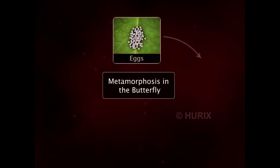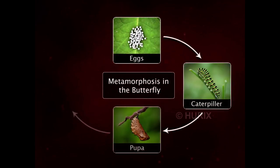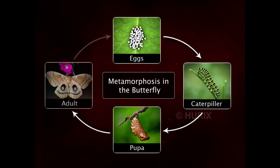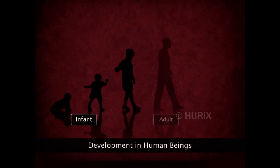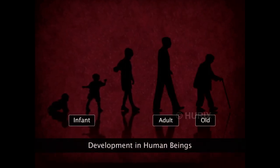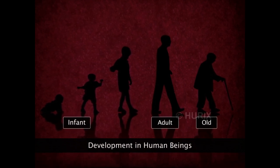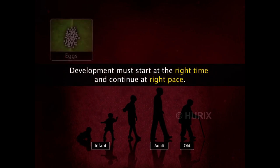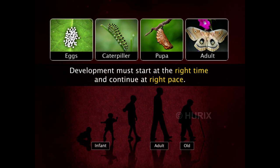To become an adult, the larva of a butterfly undergoes a series of changes during the stage known as metamorphosis. Similarly, our body also undergoes a variety of changes as it grows from infant to adult. It is very essential that all life processes in living beings, including development, must initiate at the right time and progress at the right pace.